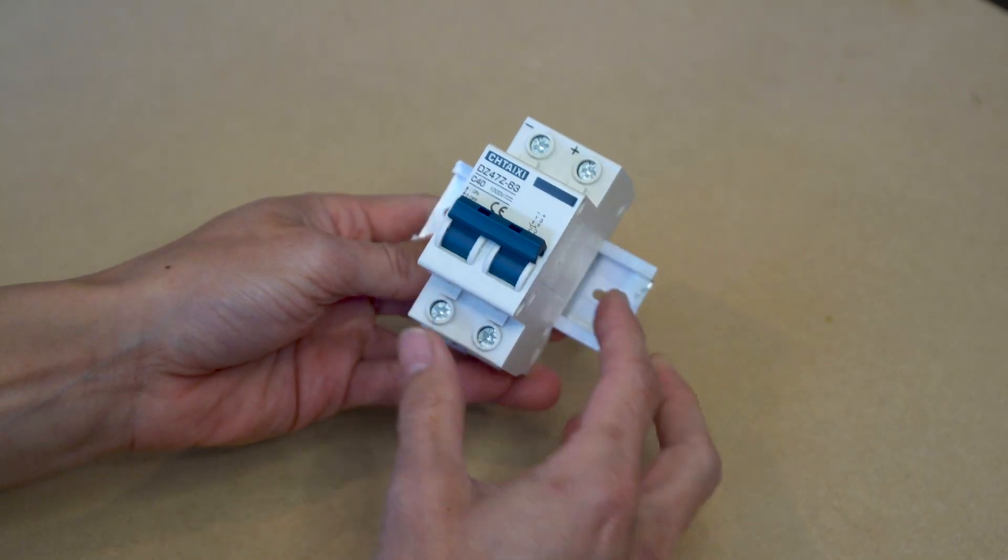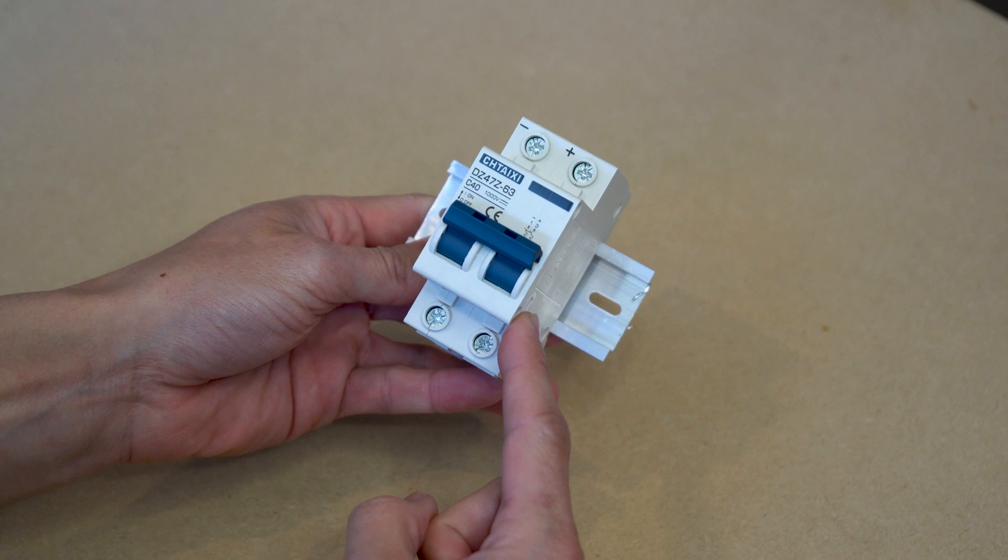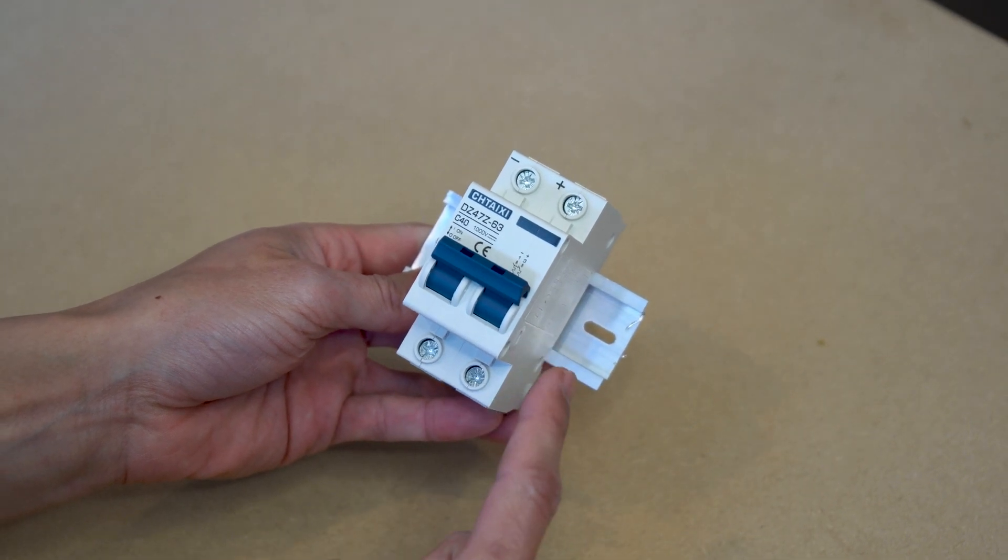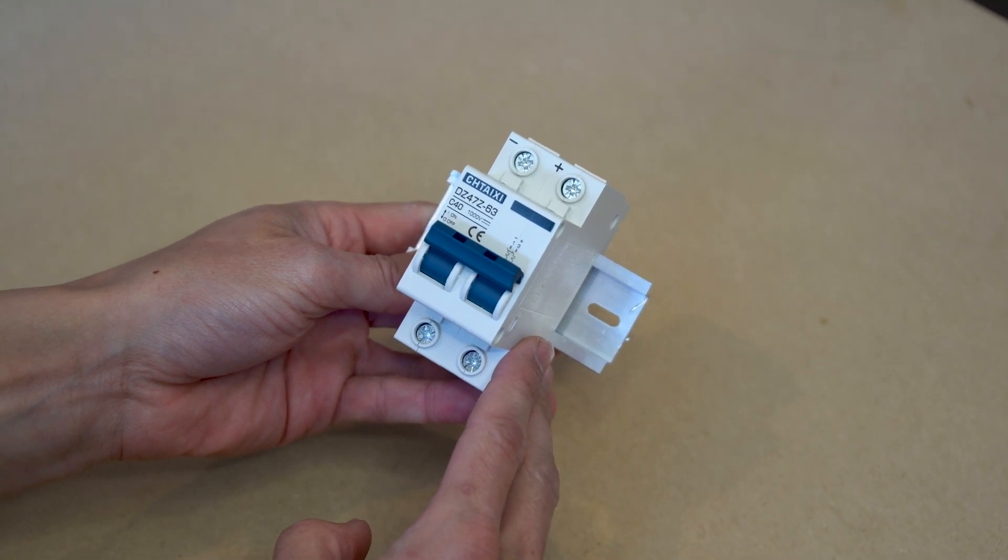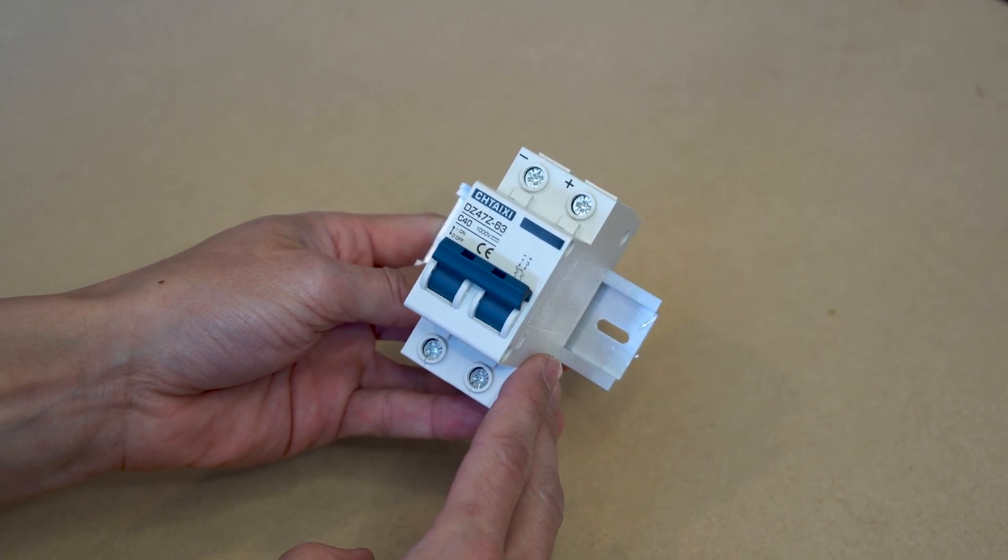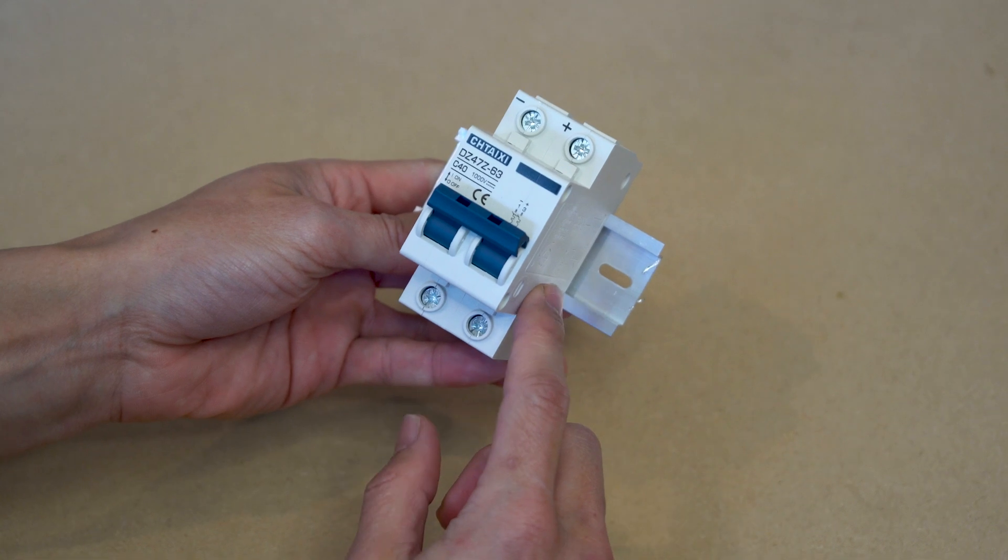If you're sizing a breaker for a solar system you'll need to calculate the total potential current output of your solar system by referring to your panel's short circuit current rating and multiplying this amount by 1.56. Then round up to get your breaker rating.